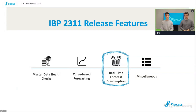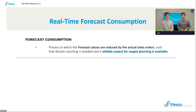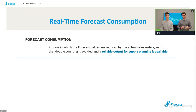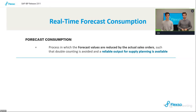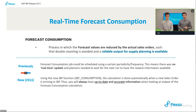The next topic is real-time forecast consumption. To start with a high-level definition: forecast consumption is a process in the system where you reduce your forecast values by your actual sales orders, to avoid double counting and ensure sales orders are considered correctly, giving you a reliable output for supply chain planning. You take your forecast values, take into account your sales orders for a specific product-location or another freely defined level, and get a reliable output for supply planning.